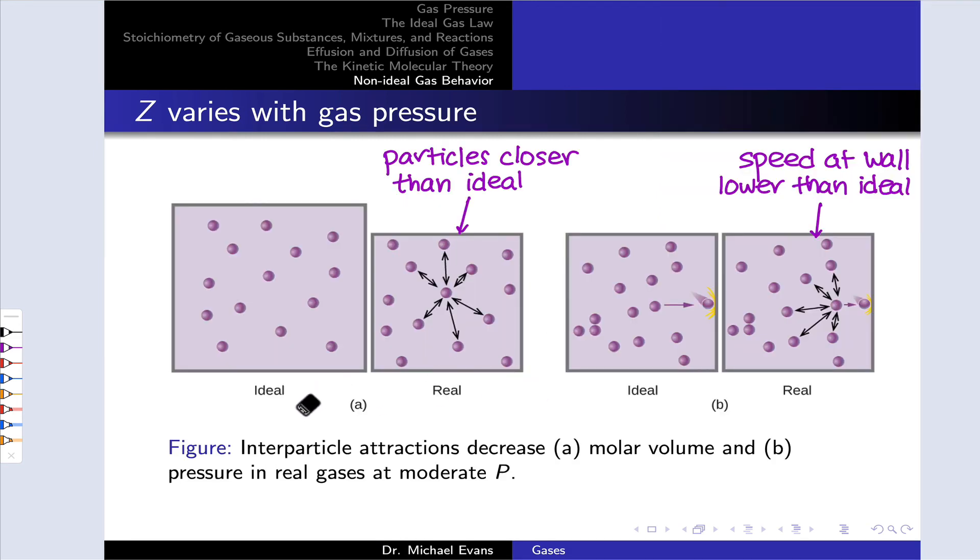This slide just shows what happens at moderate pressures when Z dips below one, when Z gets lower than the ideal gas ideal value. So the decrease in molar volume we understand as being derived from these attractions between the gas particles, compressing things down, sort of pulling things in.